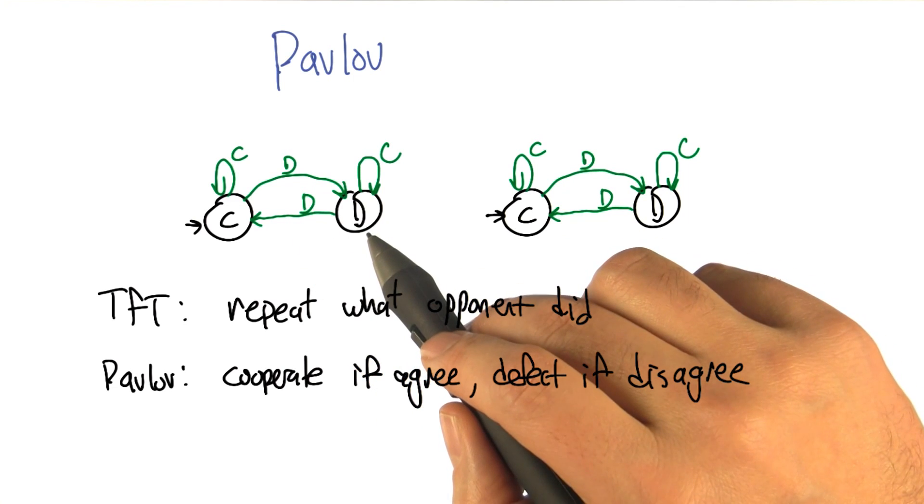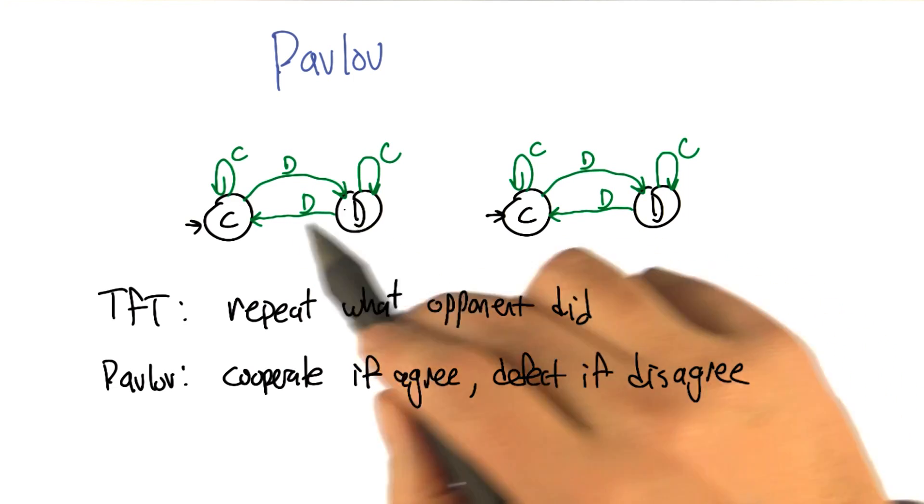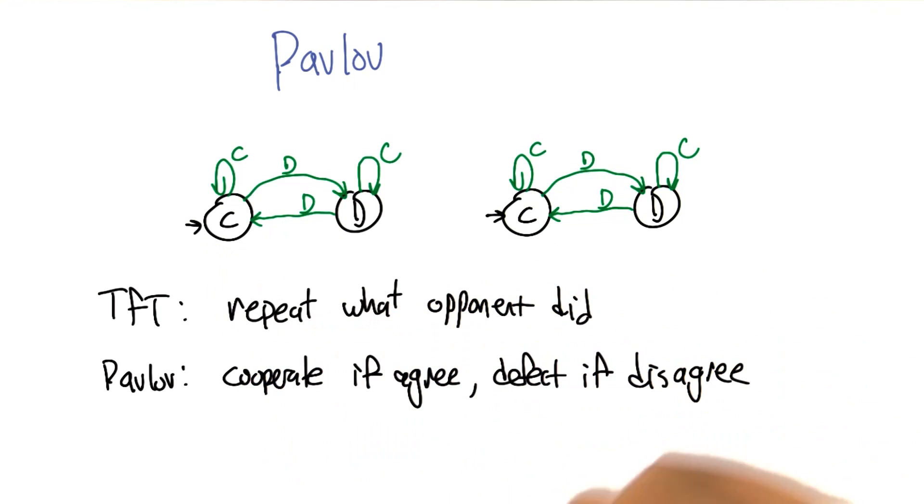The way to get me to stop defecting against you is to defect against me, and then I become cooperative again. In other words, take advantage of you until you sort of pull a trigger on me.